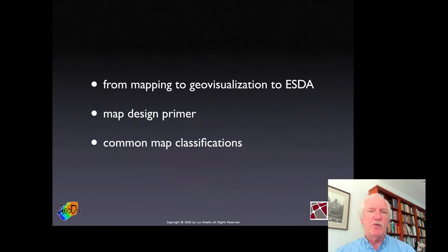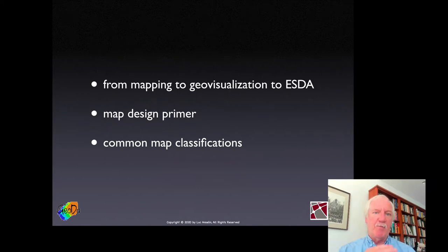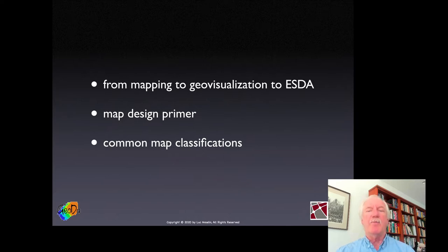I've divided this into two sets of slides. The first set will present some overarching concepts, situating where geo-visualization and exploratory spatial data analysis are in an evolution from mapping for presentation to mapping for analysis. Then some basic ideas about what constitutes a good map — the elements to think about when making a map, particularly things like color, legends, scale, and projections. Just a primer: what are some important points?